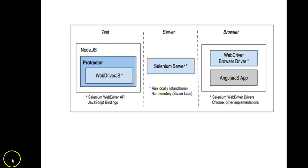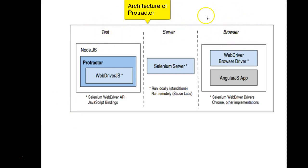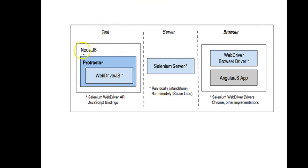As you can see, this is the architecture of Protractor. There are three layers: test layer, server layer, and browser. It's a three-layer architecture. In the test layer we have Node.js along with Protractor and WebDriver.js implementation. Protractor, as we all know, is a wrapper on top of Selenium WebDriver.js.